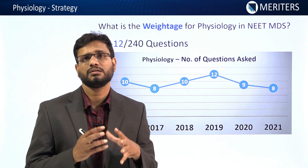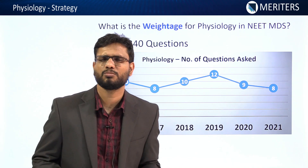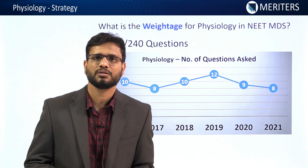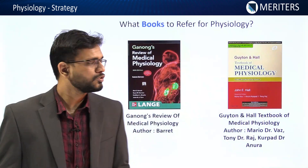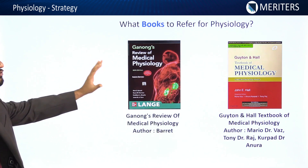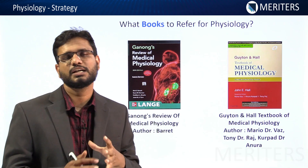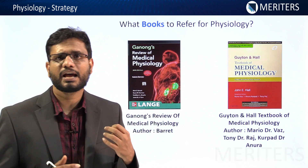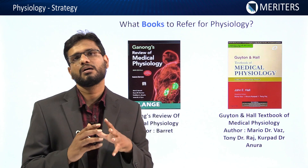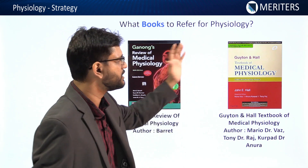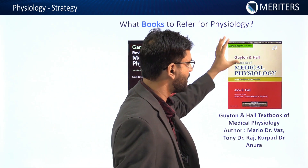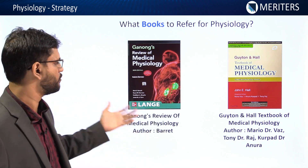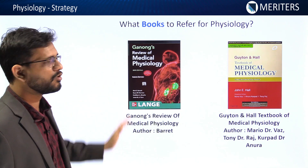I will be discussing more about the important topics — you can get almost all the questions from those topics. Now let me come to the books for physiology. The two important books are Ganong's Review of Medical Physiology and Guyton and Hall. Guyton and Hall is relatively more concise; if you want in-depth knowledge, you can go for Ganong's Review of Medical Physiology.